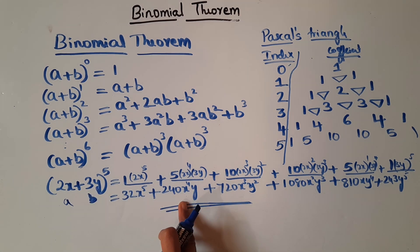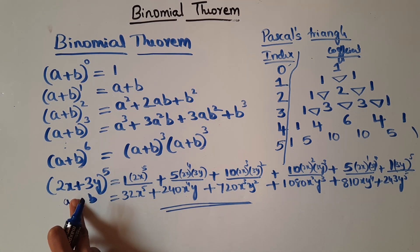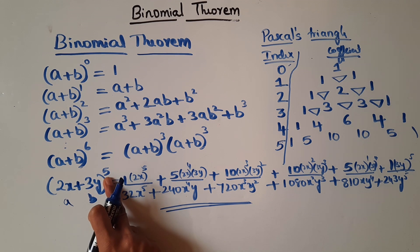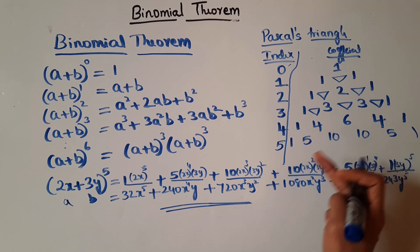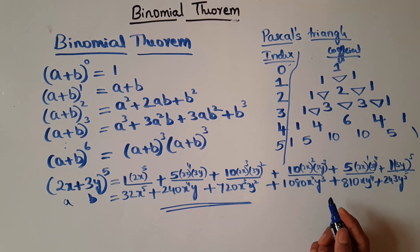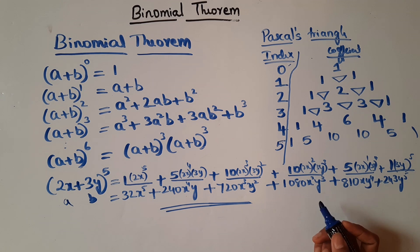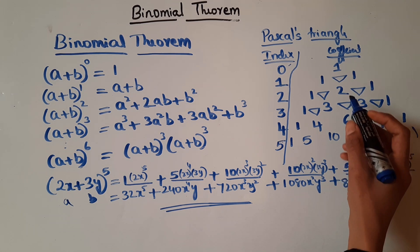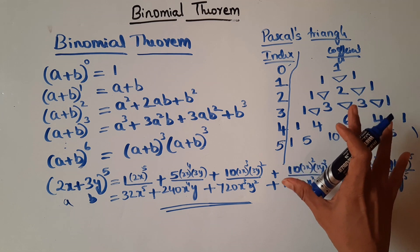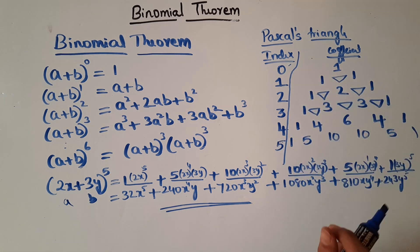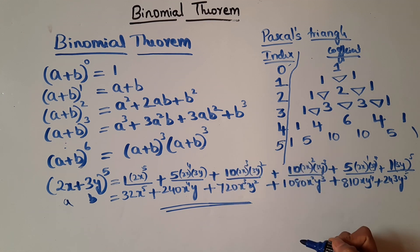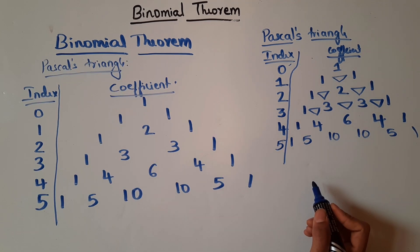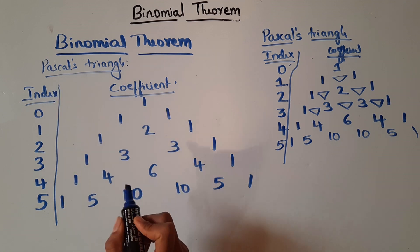We could do this only because the power of the binomial expression was small. But if it were a bigger power, we cannot keep writing the coefficients from Pascal's triangle — it's a long process. So to overcome that, we are introducing the concept of combination and rewriting this triangle. Pause the video and note this down.